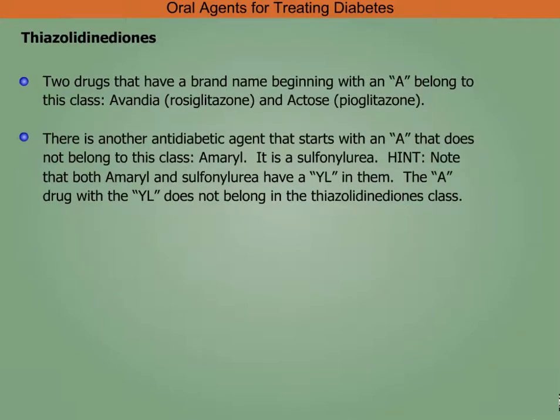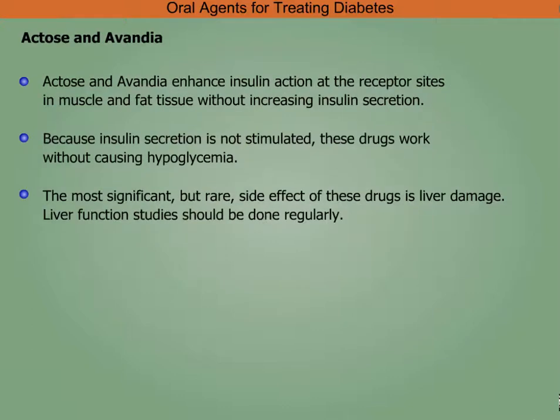Thiazolidinediones: two drugs with brand names beginning with A belong to this class — Avandia and Actos. Note that Amaryl, which starts with A, does not belong to this class; it is a sulfonylurea (both Amaryl and sulfonylurea contain 'yl'). Actos and Avandia enhance insulin action at receptor sites in muscle and fat tissue without increasing insulin secretion, so they work without causing hypoglycemia. The most significant but rare side effect is liver damage; liver function studies should be done regularly.